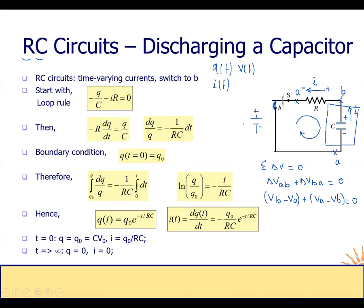For the capacitor: V_B minus V_A — V_B is at the positive side, so we have plus the voltage of the capacitor equals Q divided by C. For the resistance, V_A minus V_B is at the negative side, so we have minus I times R equals zero.